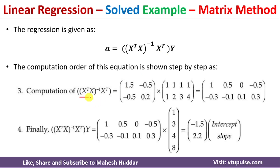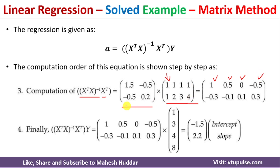Now we multiply this inverse by X^T. The first row [1.5, -0.5] multiplied across the columns of X^T gives: 1.5×1 − 0.5×1 = 1, then 0.5, 0, and -0.5. The second row [-0.5, 0.2] multiplied across the columns gives: -0.3, -0.1, 0.1, and 0.3. So the resulting matrix is [[1, 0.5, 0, -0.5], [-0.3, -0.1, 0.1, 0.3]].